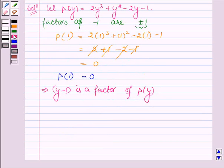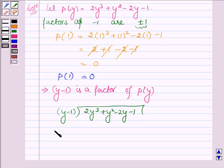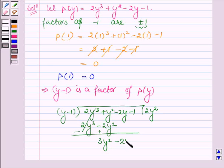On dividing p(y) by (y-1), p(y) is 2y³ + y² - 2y - 1. First multiplying (y-1) by 2y² we get 2y³ - 2y². Now changing the signs these two cancel out and we have 3y² - 2y.